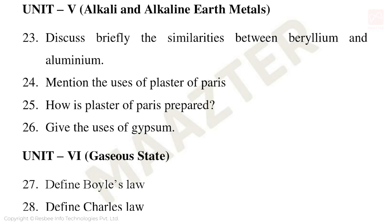Unit 5: Alkali and Alkaline Earth Metals. Important 2 mark and 3 mark golden questions include similarities between beryllium and aluminium, uses of plaster of Paris, preparation of plaster of Paris, and uses of gypsum. These are the 5th unit very important golden questions.